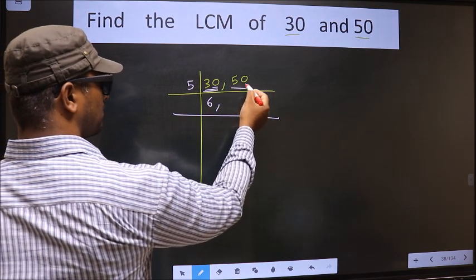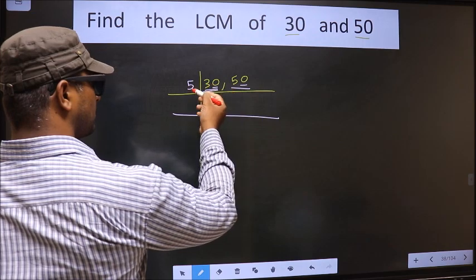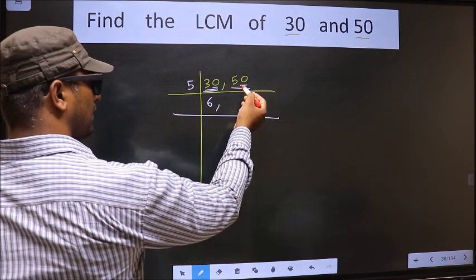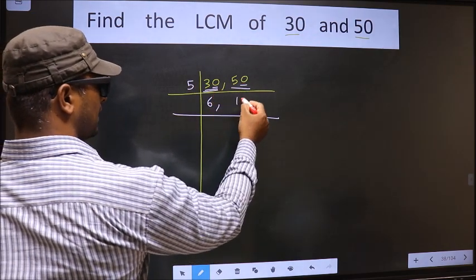Now the other number, last digit is 0, so this number also divisible by 5. When do we get 50 in 5 table? 5, 10 is 50.